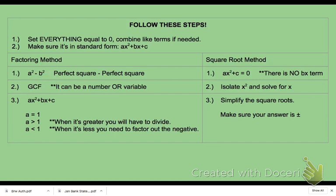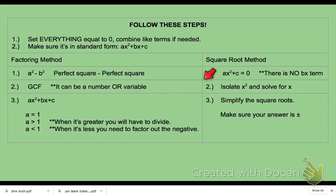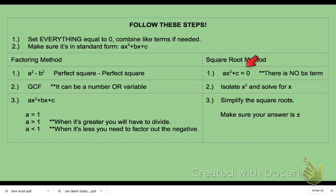Number two, look for a GCF — this can be a number or a variable. Number three, when you have a trinomial, check if your a is equal to one — that's the easiest case. If a is greater than one, you'll have to multiply and then divide, simplifying your fractions. If a is less than one, you have a negative a term and you have to factor that negative out. The second method is the square root method: ax squared plus c, with no bx term.